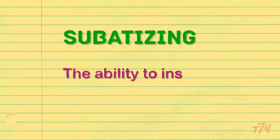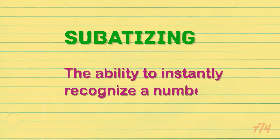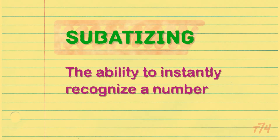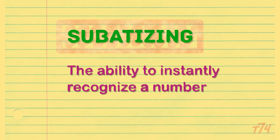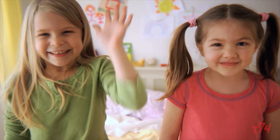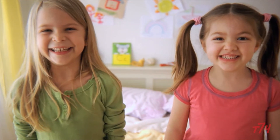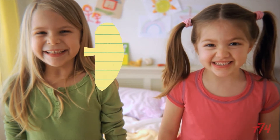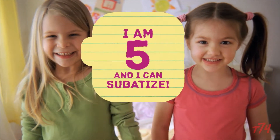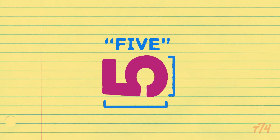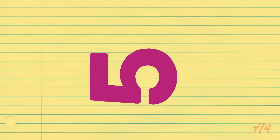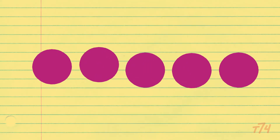We teach kids how to subitize. And subitizing is being able to instantly recognize numbers. Our four- and five-year-olds will go around and say, 'I am five and I can subitize.' The number five is a symbol that's very abstract. But here, I can look at five and students can see how five is broken down.